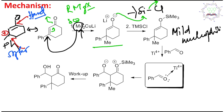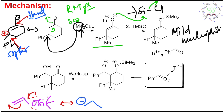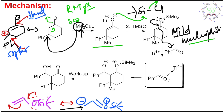Silyl enol ethers are mild nucleophiles. They are nucleophilic because of a canonical form: the lone pair on oxygen can delocalize, producing a canonical form where the carbon carries a negative charge and the oxygen carries positive charge. However, because this canonical form involves charge separation, its contribution to overall electron distribution is less — making this a milder nucleophile.